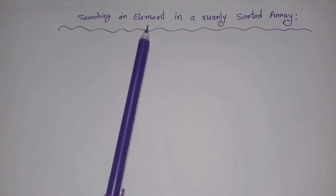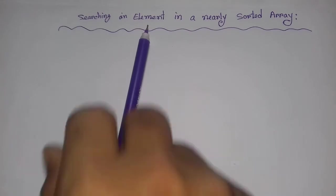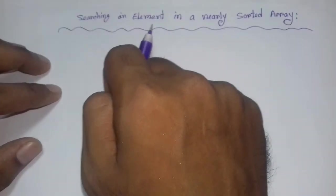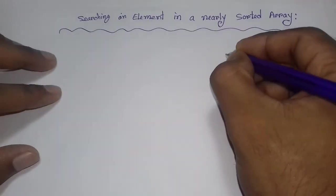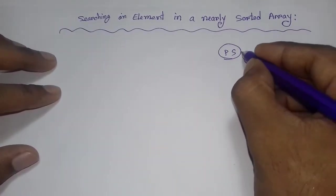We are going to apply binary search on this nearly sorted array. There is a difference here: if the array were fully sorted, binary search would be straightforward. But since it is nearly sorted — or almost sorted — we need to handle it differently.